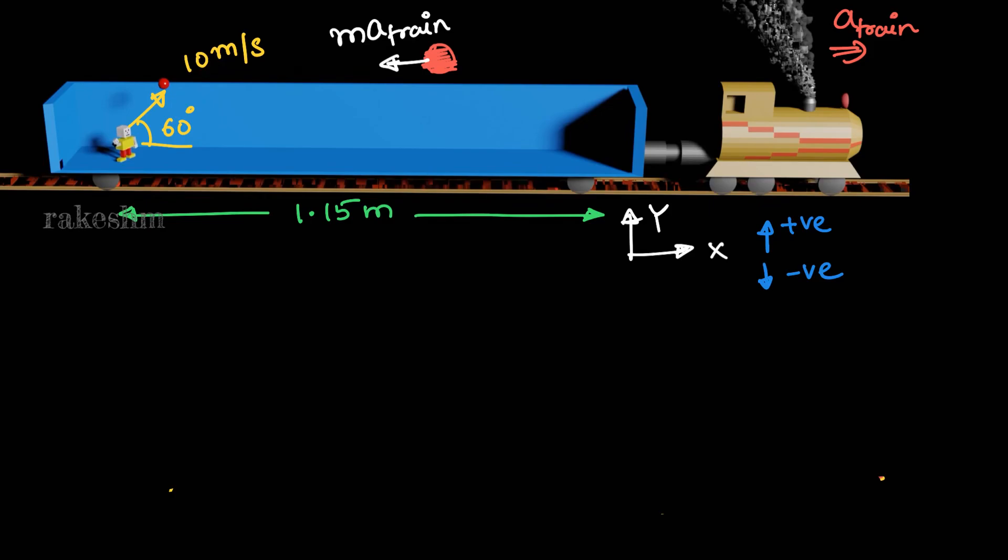So in x direction we have initial velocity in x direction is 10 cos 60. Acceleration in the x direction, as non-inertial frame in the opposite direction, we are taking minus a train. Displacement is forward so 1.15 meter and time is root 3 seconds. Also note that we are taking this side of x axis as positive and left of x axis as negative.